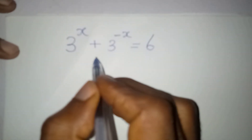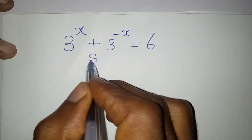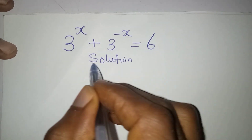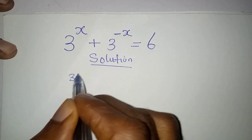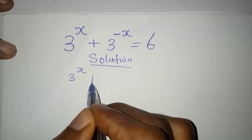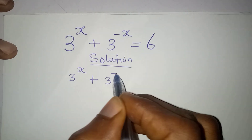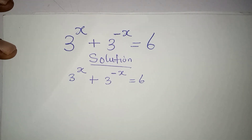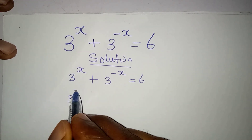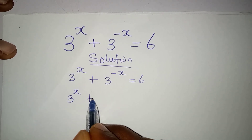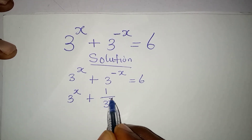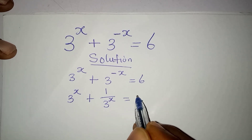Hello everyone, let's solve this problem very quickly. We have 3 to the power of x plus 3 to the power of negative x is equal to 6. The first step is: 3 to the power of x plus 1 over 3 to the power of x is equal to 6.